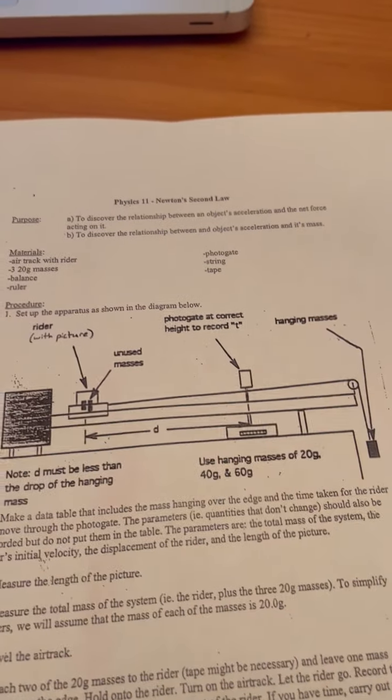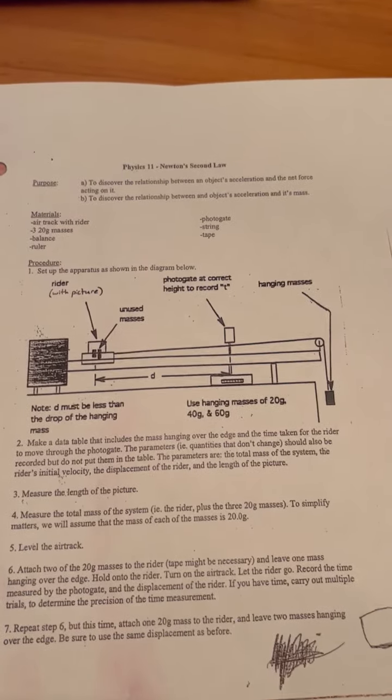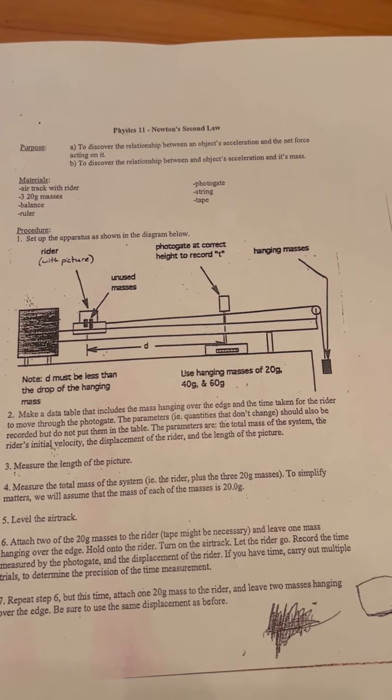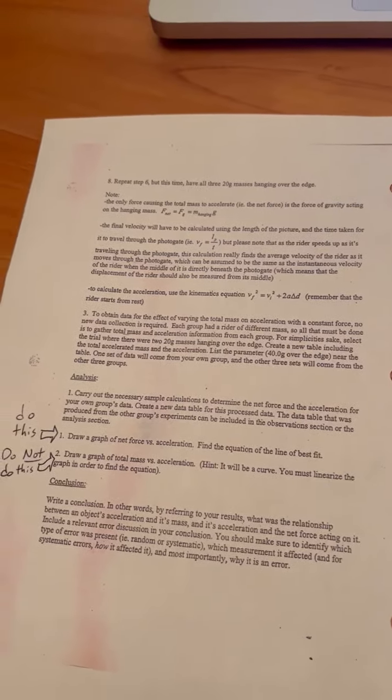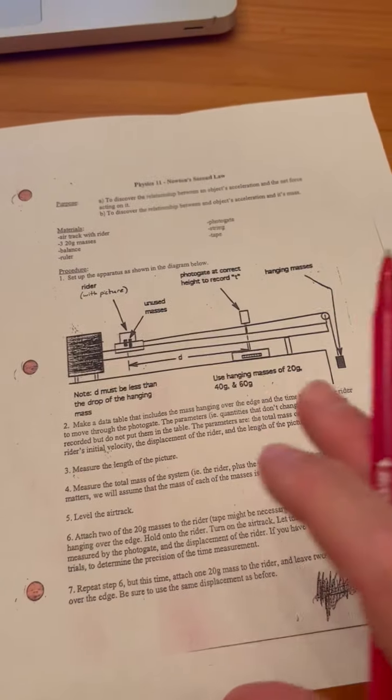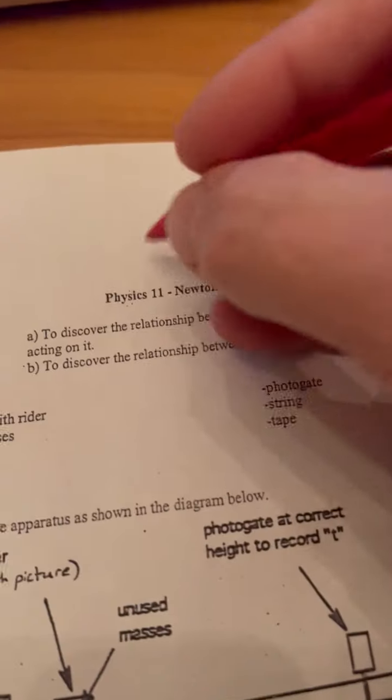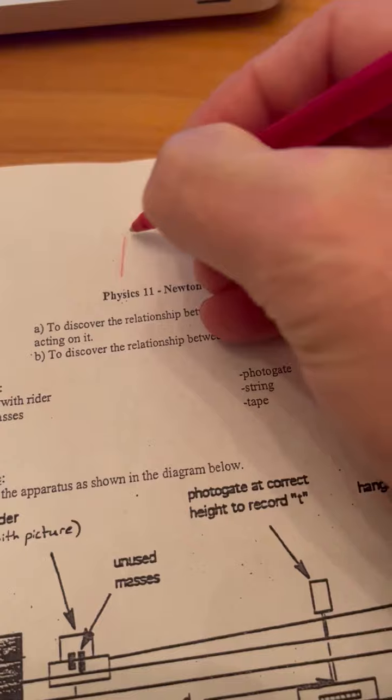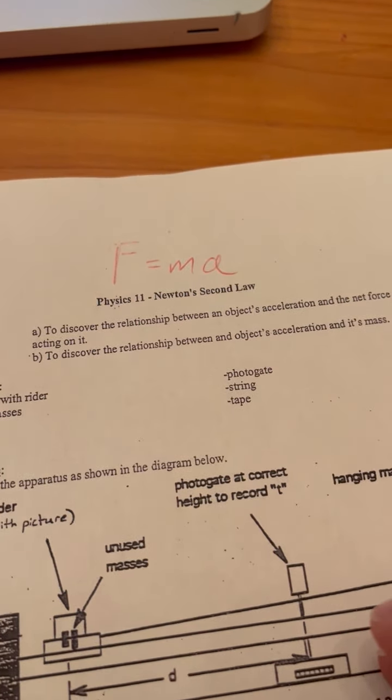Hey, physics peeps. I wanted to explain this lab that hopefully you're going to get a chance to do today. This is a formal lab, but it's kind of a recipe book lab. If you just follow the instructions and get the data, hopefully you can see that Newton's second law, which is F equals MA, and we're going to try to verify that with this lab.